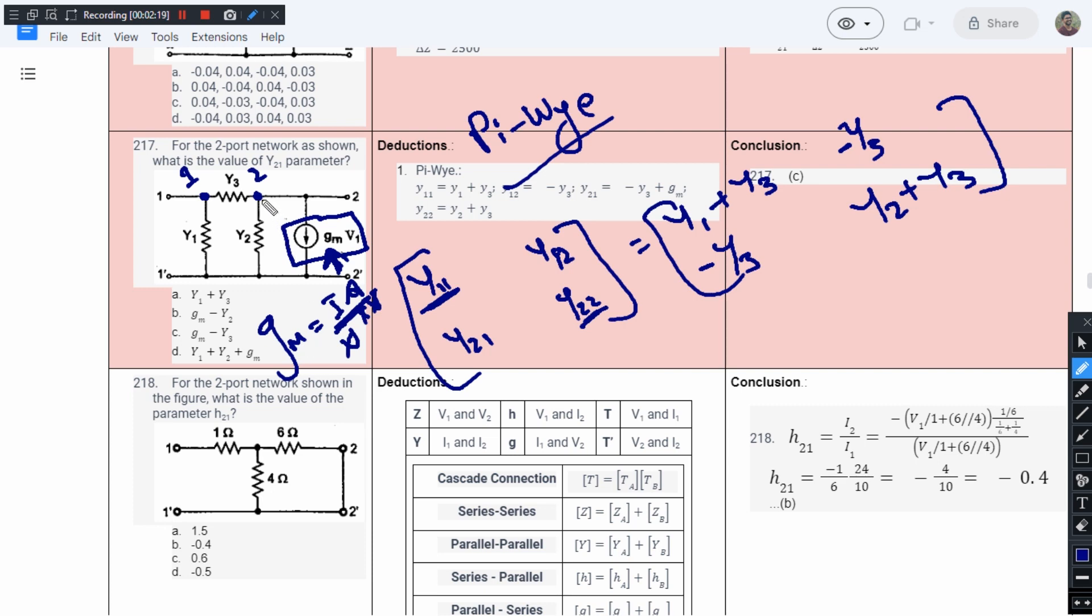Since this gm is attached to this point, we will have a minus. And if you observe, this is taking the current away from this node, so it will be minus gm. So minus and minus become plus. This will be Y3 plus gm.